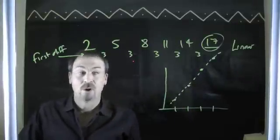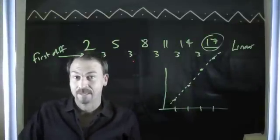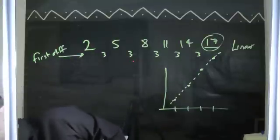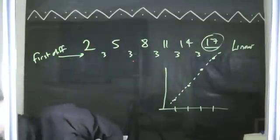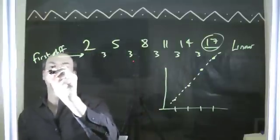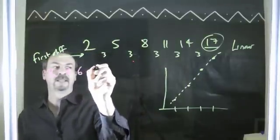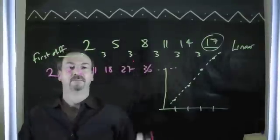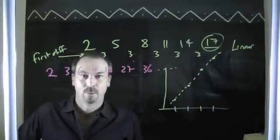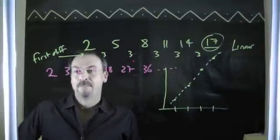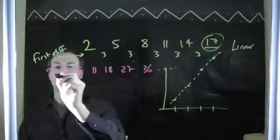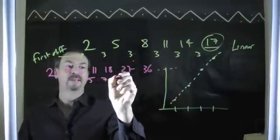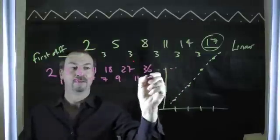But of course, not all sequences are going to be this nice. For example, look at the sequence 2, 3, 6, 11, 18, 27, 36, and so on. First differences — are they constant? No: 2 to 3 is up 1, up 3, up 5, up 7, up 9, up 11, and so on.